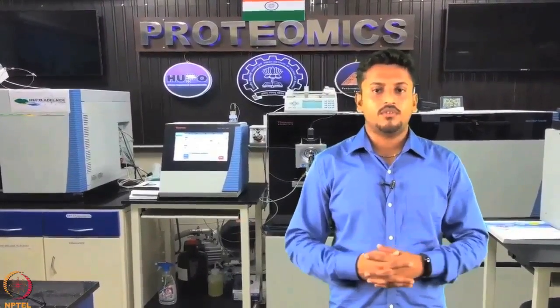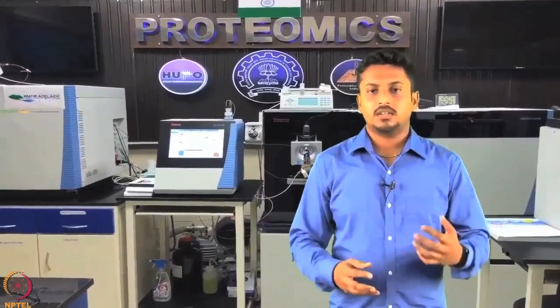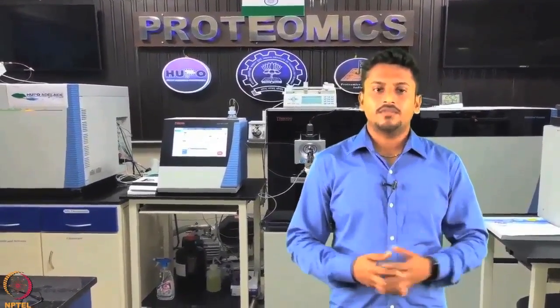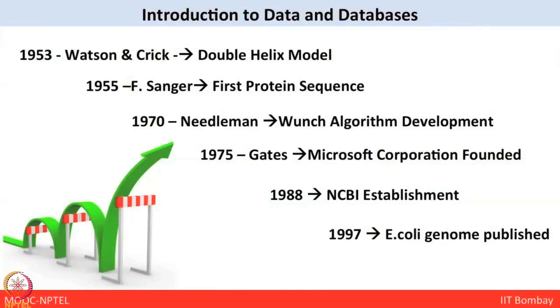First, we all know that even before 10 or 20 years, the amount of data generated was not as huge as what is being generated today. In 1953, Watson and Crick were the first to propose the double helix model for DNA based on X-ray data — this can be taken as the first milestone of data generation. After that, in 1955 the sequence of the first protein, bovine insulin, was analyzed, followed by 1970 when the first algorithm, the Needleman-Wunsch algorithm, came into play.